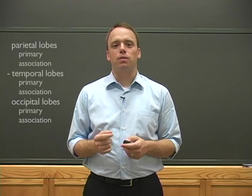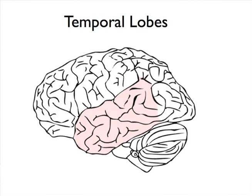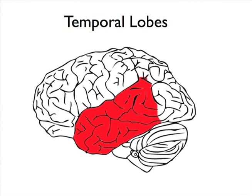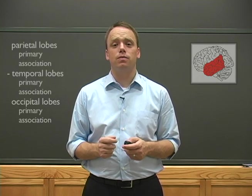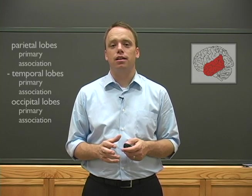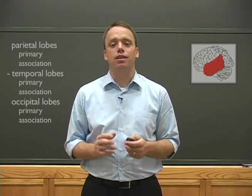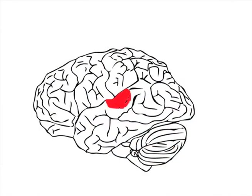The second sensory lobe we'll talk about today is the temporal lobe. The temporal lobe plays an important role in the processing of auditory information — everything from decoding very basic sound qualities like volume and frequency, all the way up to complex language comprehension. As with other lobes, we'll make a distinction between the primary auditory cortex and its association areas. The primary auditory cortex of the temporal lobes is the major target area for auditory signals from the cochlea of the inner ear.